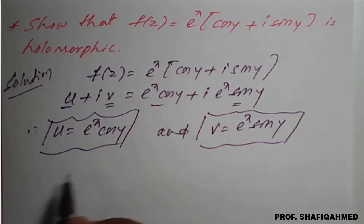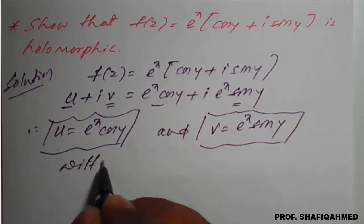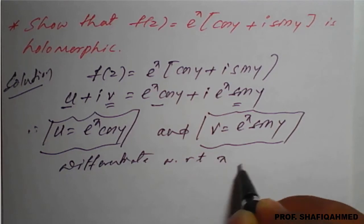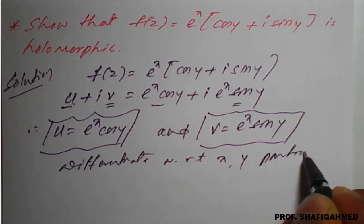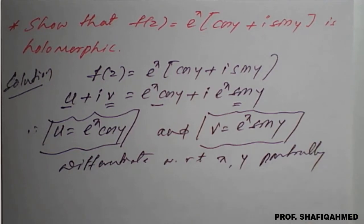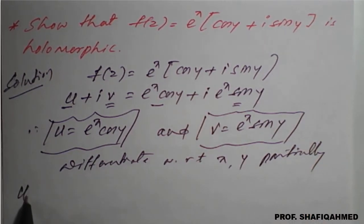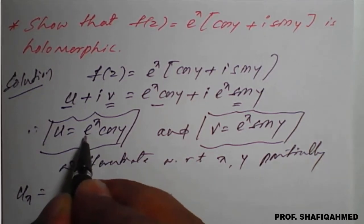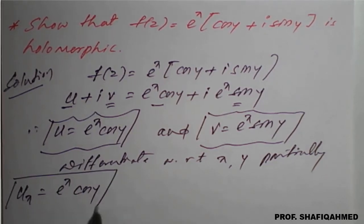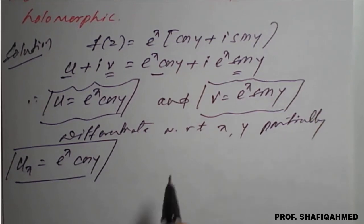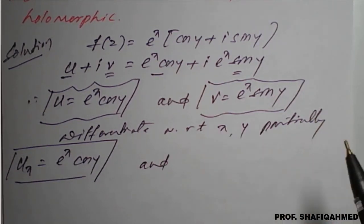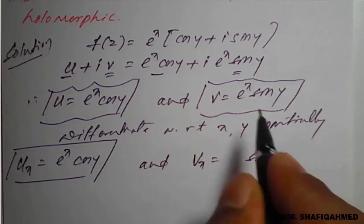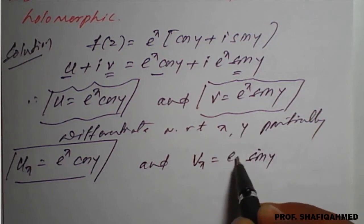Once we get u and v, we go for differentiation — differentiating with respect to x and y partially. On differentiating with respect to x partially: u_x = e^x · cos y, since cos y is a constant and the derivative of e^x with respect to x is e^x. Similarly, v_x = e^x · sin y, keeping sin y as a constant.